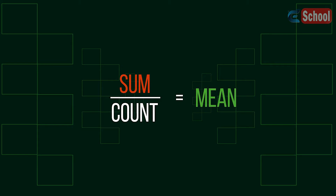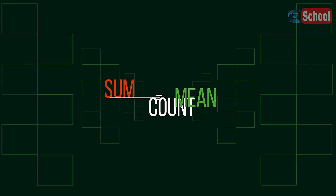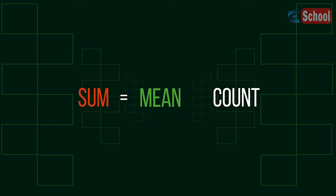The application of division can be reversed to help us find an original value given the mean. The reverse process to division is of course multiplication.